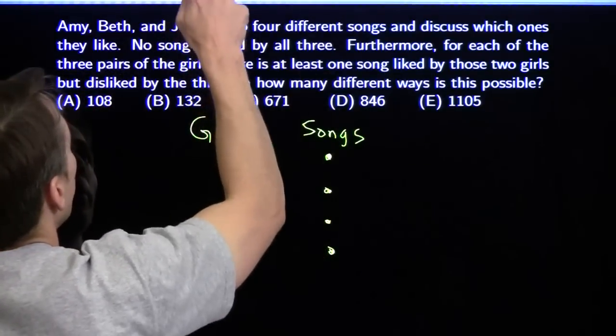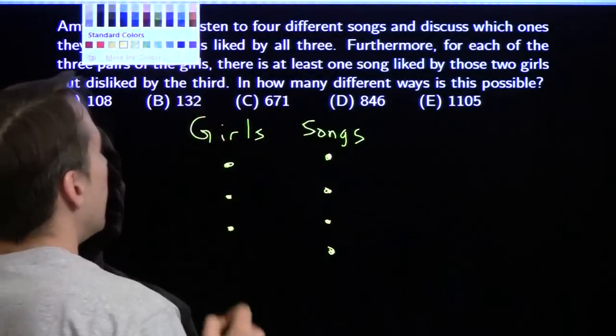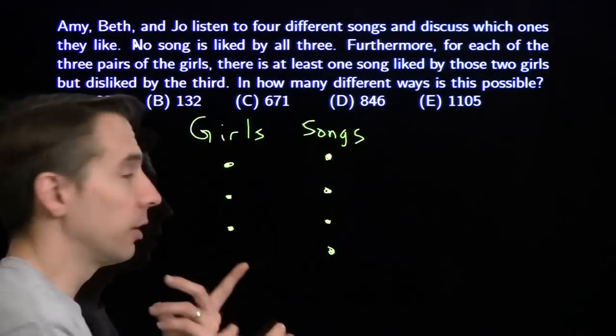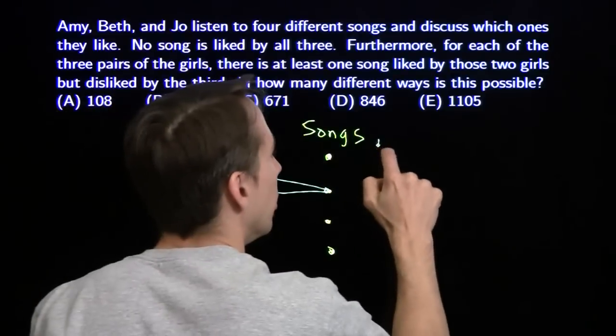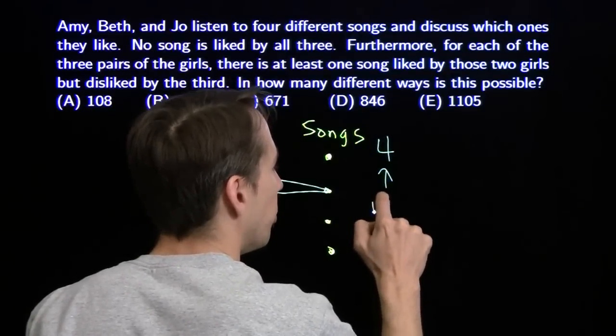We'll start off here by picking a song that the first pair of girls likes. So there's four songs over here they can choose from. Let's say they choose this one. So you have four ways for the first pair to choose.